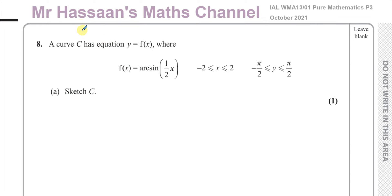Welcome back. This is Mr. Hassan's Maths Channel and this is question number 8 from the October 2021 International A-Level Pure Mathematics P3 exam. This question is about the inverse trig ratio for sine — arc sine. We're asked to sketch the graph of f(x) equals arc sine of half x, for x between minus 2 and 2, and y between minus pi over 2 and pi over 2.